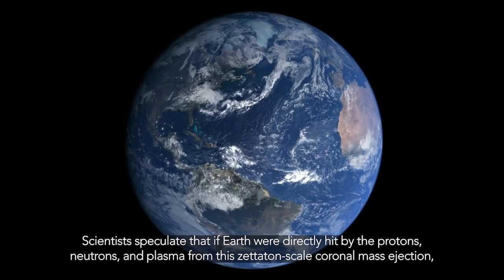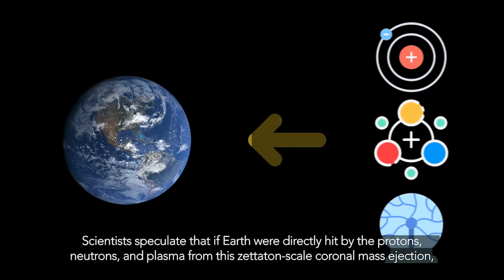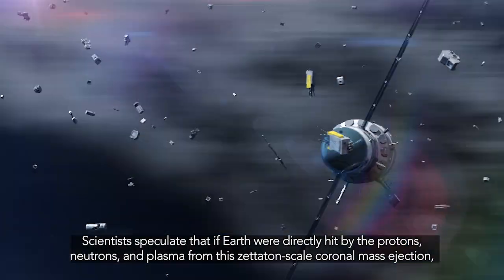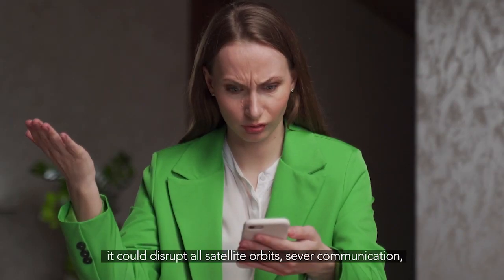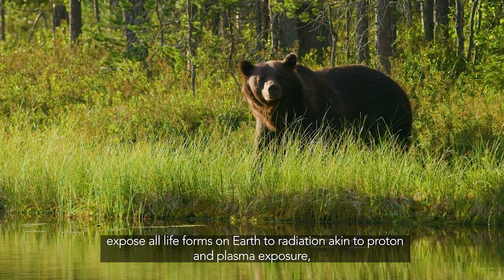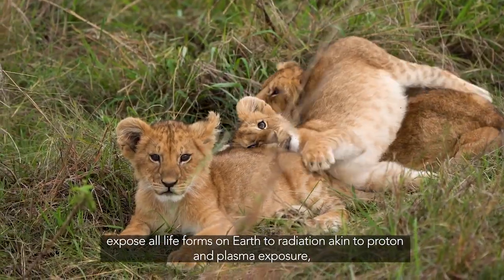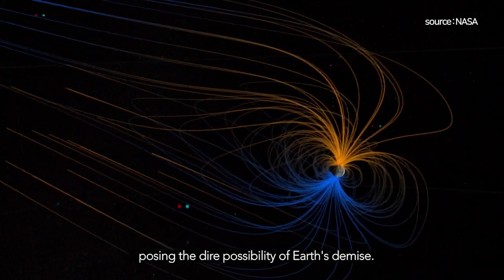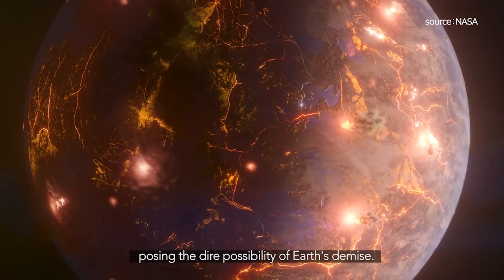Scientists speculate that if Earth were directly hit by the protons, neutrons, and plasma from this zetatons-scale coronal mass ejection, it could disrupt all satellite orbits, sever communication, expose all life forms on Earth to radiation akin to proton and plasma exposure, and potentially lead to the disruption of Earth's magnetic field, posing the dire possibility of Earth's demise.